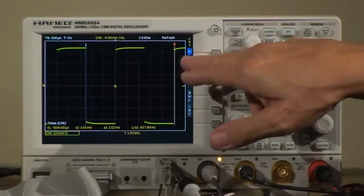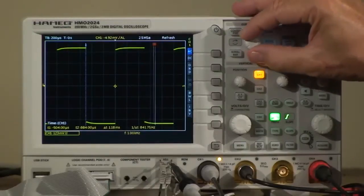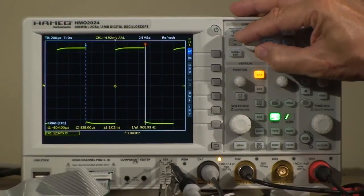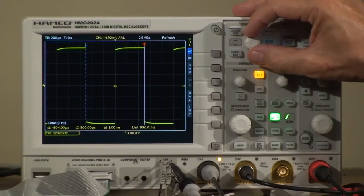And I'll change to the other cursor being active. I put that on the falling edge, and then I can measure the period or the frequency of the signal.